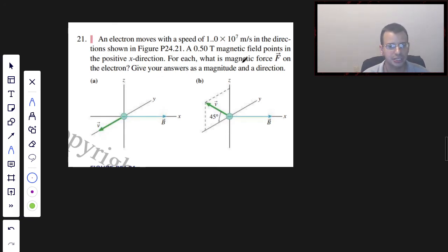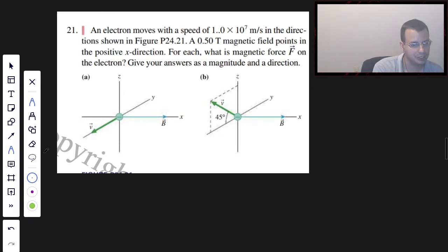For each, what is the magnetic field in the x direction? For each, what is the magnetic force, vector F, on the electron? Give your answers as both a magnitude and direction.